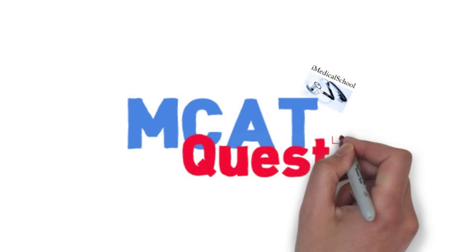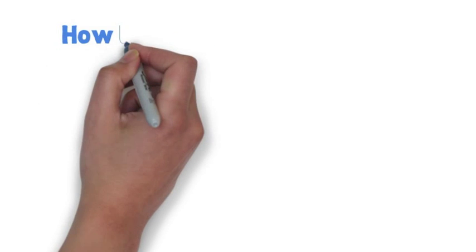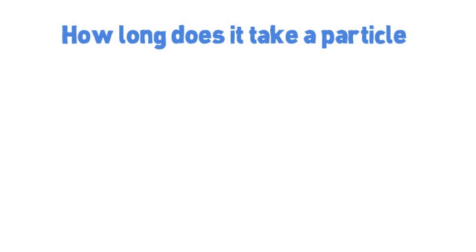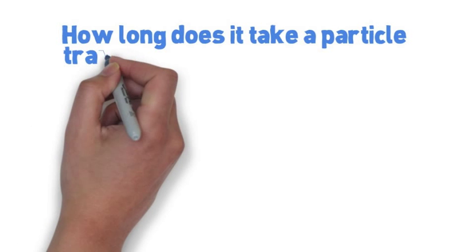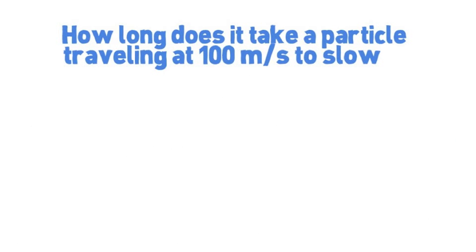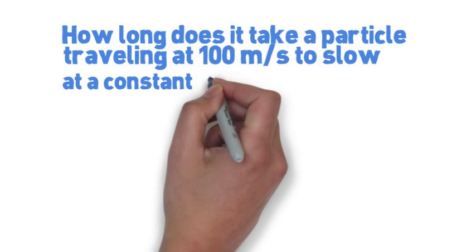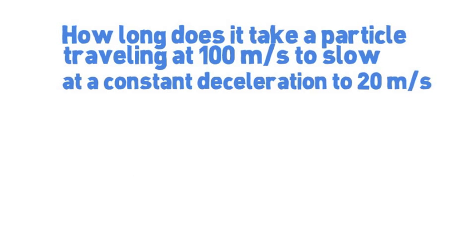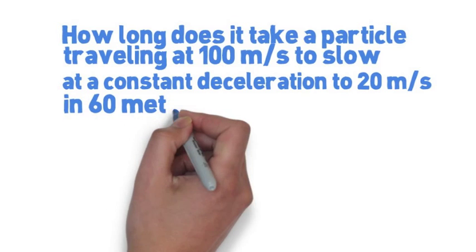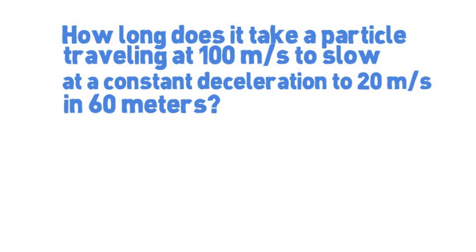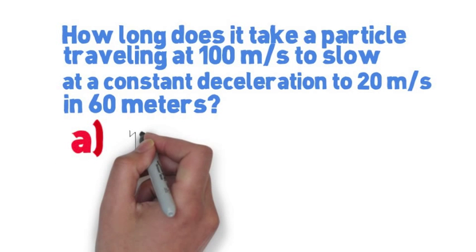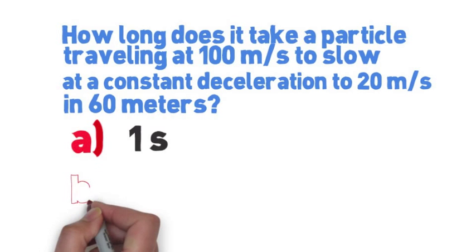So the question is a particle is traveling at 100 meters per second. How long does it take a particle traveling at this speed, 100 meters per second, to slow down to 20 meters per second at a constant rate of deceleration in about 60 meters? Take some time and pause the video here so you can figure out the problem.